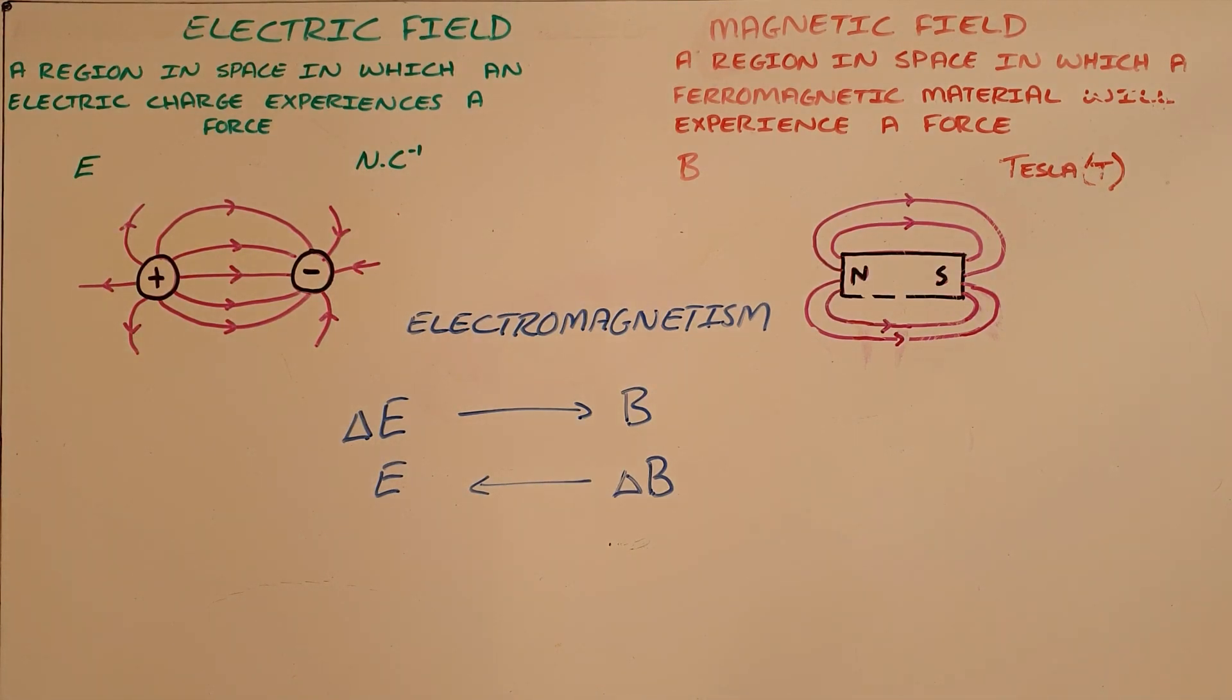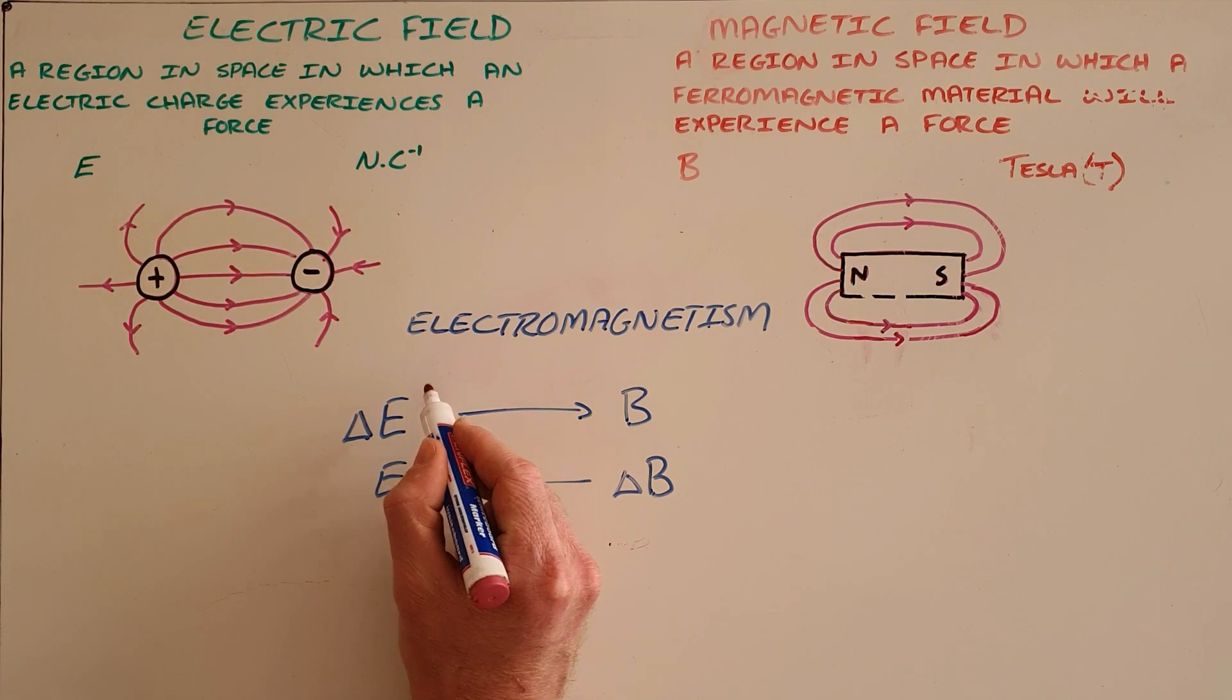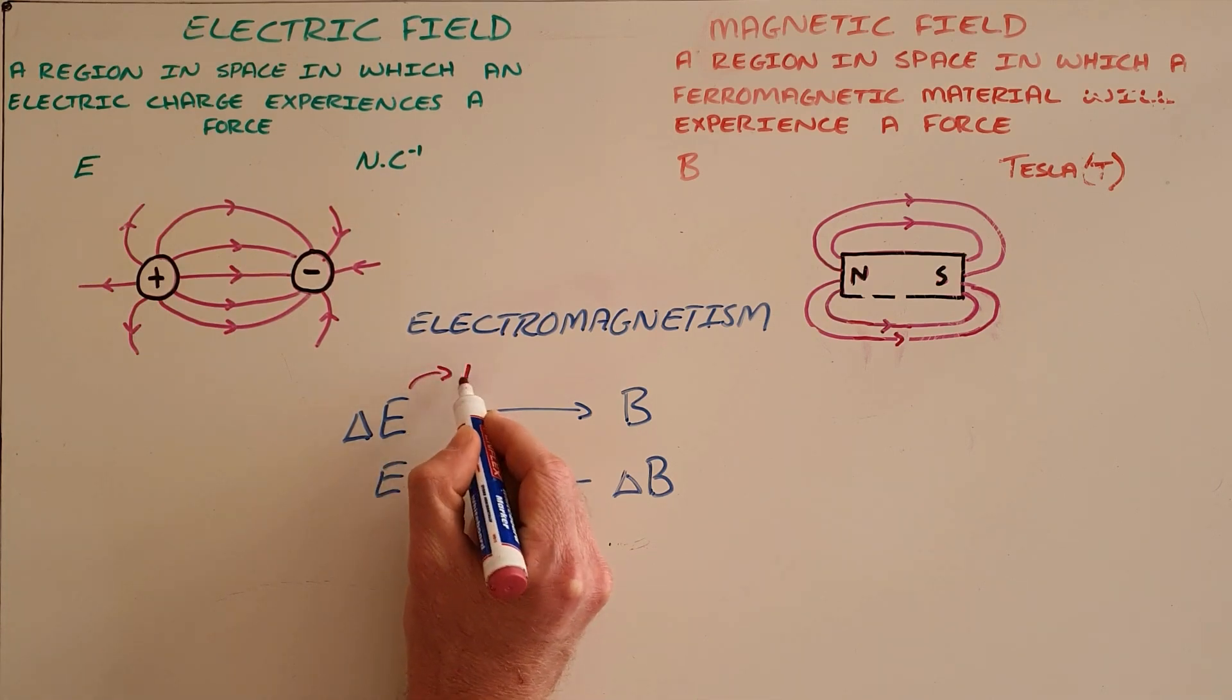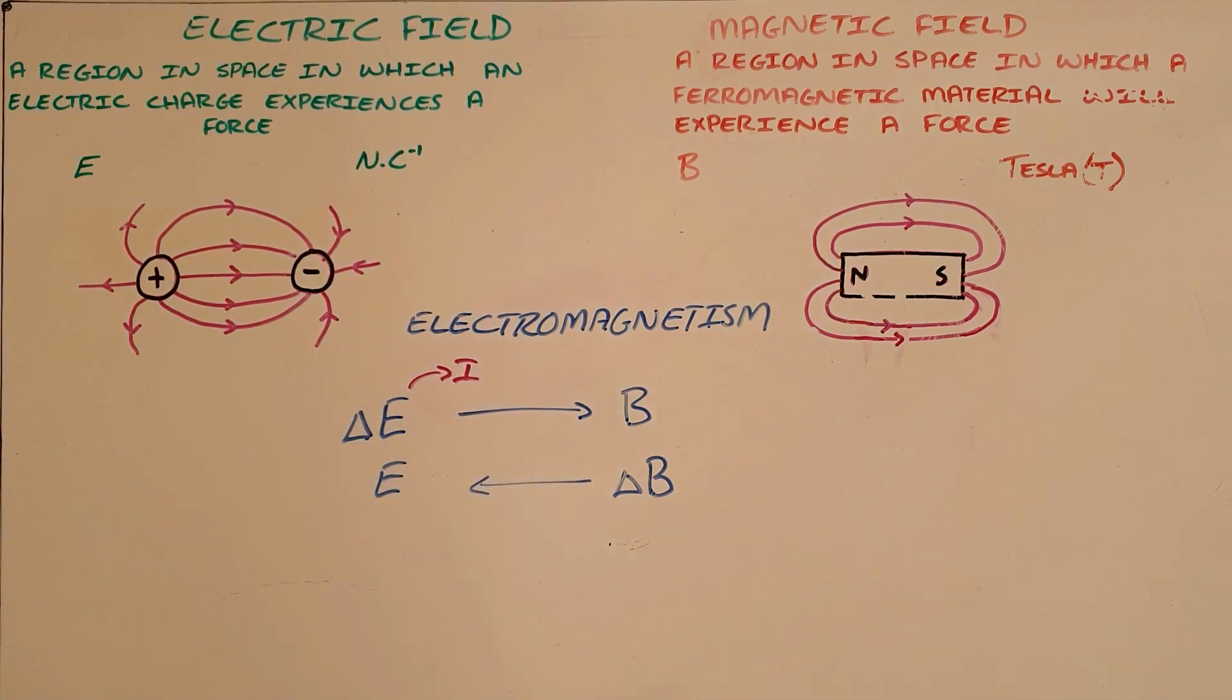Creating a changing field is very simple, as a changing electric field simply means a charge that is moving. We know that when charge is moving, we know that we have a current that is moving through a wire or some kind of conductor.